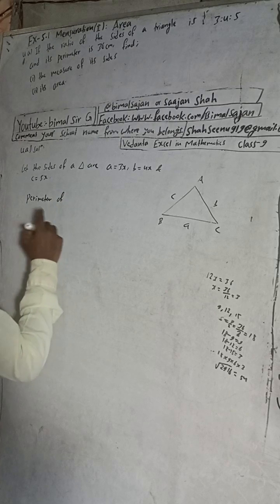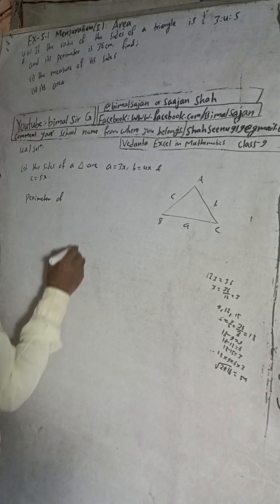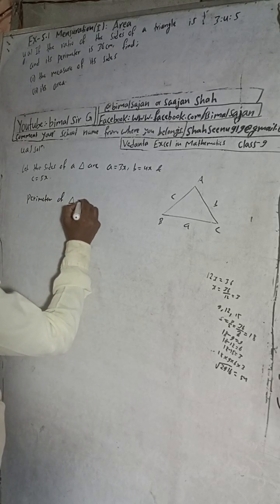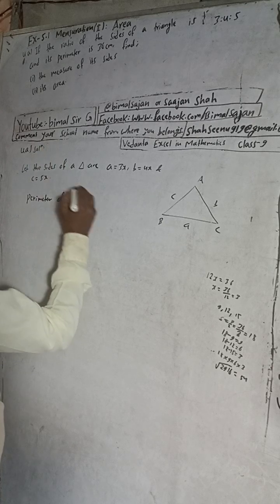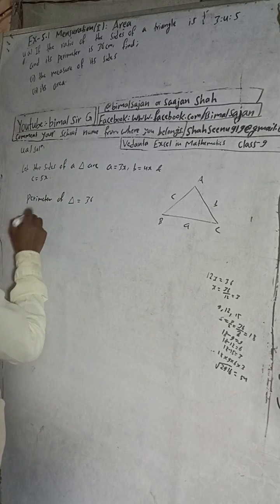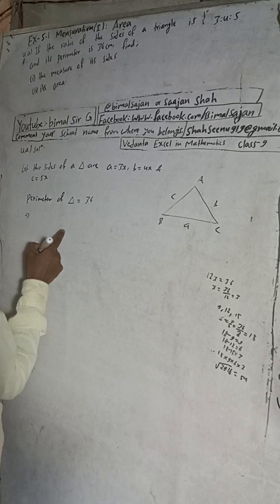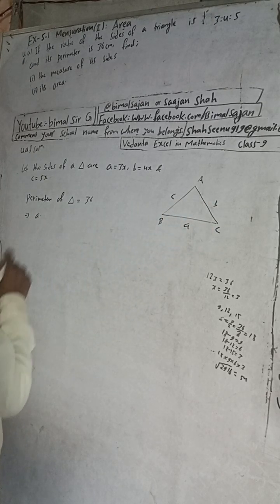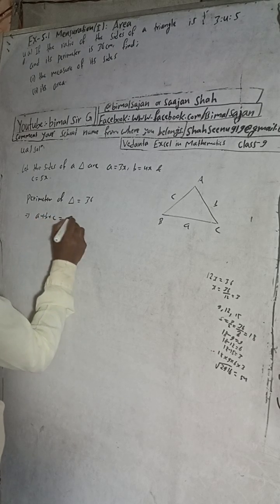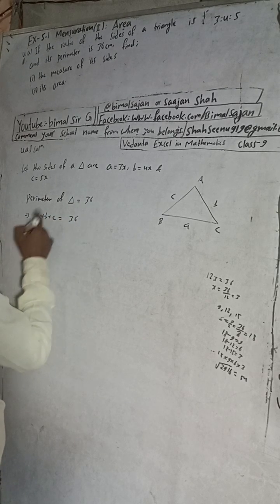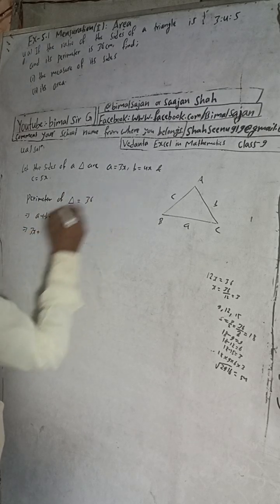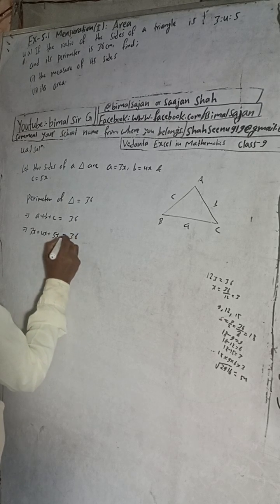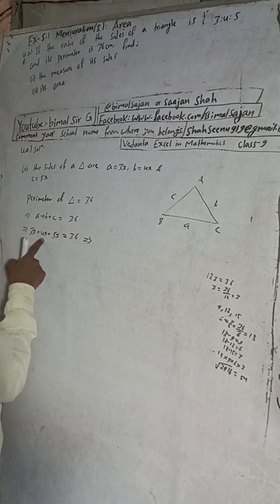The perimeter of the triangle is equal to 36. We know the perimeter formula is a + b + c. Substituting: 3x + 4x + 5x = 36.